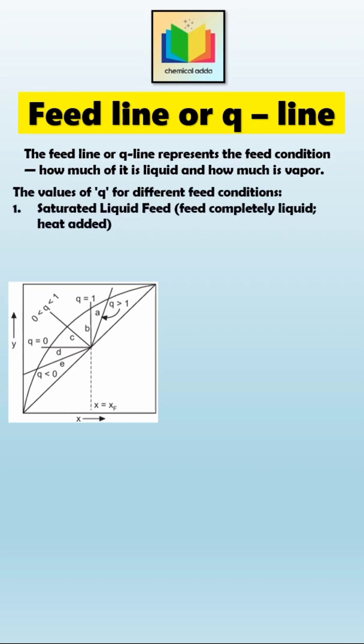Let's start with the saturated liquid feed. In this case, the feed entering the column is completely liquid. So we need to add heat to vaporize a part of it before separation can begin. Here, Q equals 1 and that makes the slope infinite. When we draw this on the McCabe-Thiele diagram, we get a vertical line. That's the Q line for a saturated liquid feed.